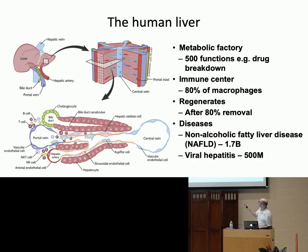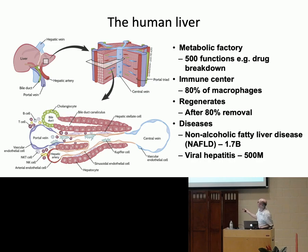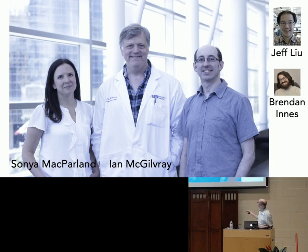The liver is made up of hexagonal blocks called lobules, with a central vein and a portal vein. Each one has a whole structure for taking blood from one to the other, cleaning the blood and adding nutrients. There's a lot of plumbing in the liver responsible for helping you digest food, taking in nutrients, providing nutrients, and cleaning the blood. I got involved with researchers in Toronto — Ian McGilvery, a liver transplant surgeon, and Sonia McParland, a liver immunologist.